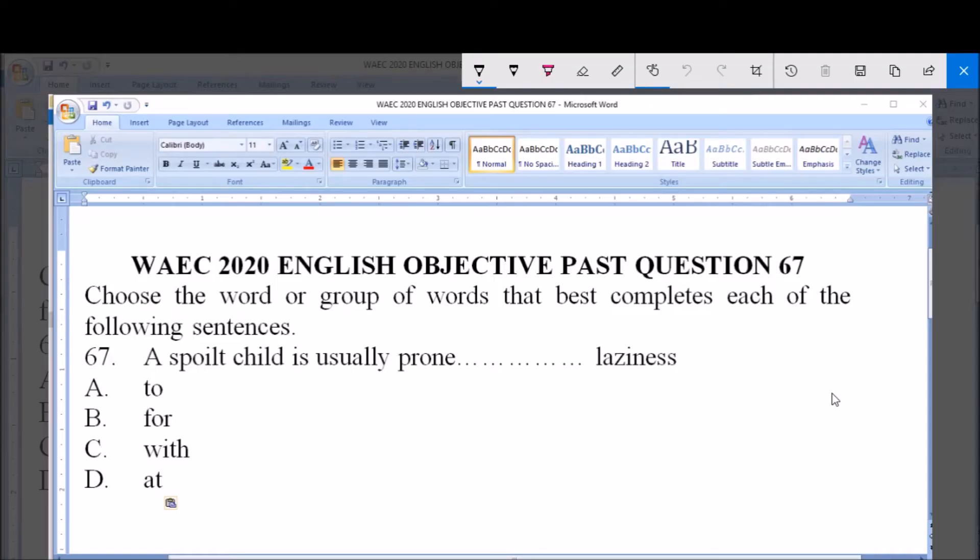Welcome to 2020 English Objective Past Question, question number 67. The instruction here says choose the word or group of words that best completes each of the following sentences.